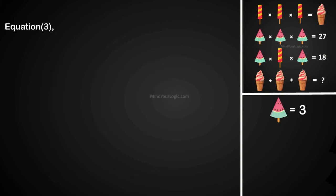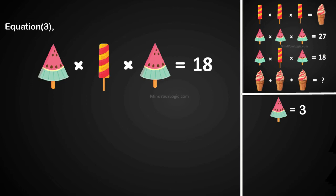Now equation 3. Watermelon candy multiply ice candy multiply watermelon candy equals 18. On substituting the value we get, the value of ice candy is 2.